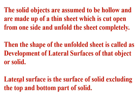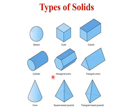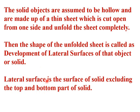The word 'lateral surface' comes in because the surface of the solid excludes the top and bottom portions. The bottom and top are excluded, and only the round or side portion is considered. Therefore it is known as development of lateral surface — the top and bottom are not included in it.